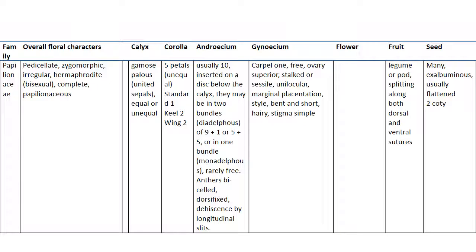Calyx equal or unequal, five in number. Corolla five petals, unequal: standard one, keel two, and wing two. Androecium usually ten stamens — nine plus one, or five plus five. The nine-plus-one arrangement is diadelphous; rarely free.